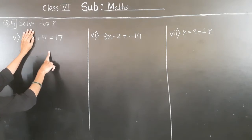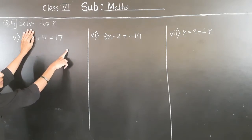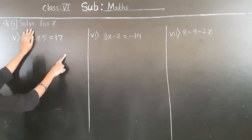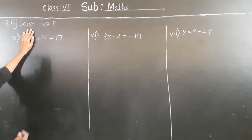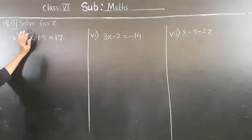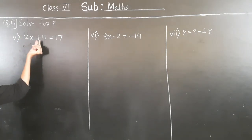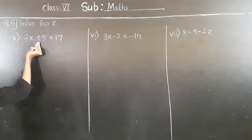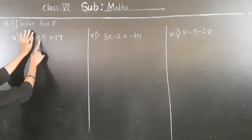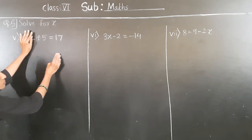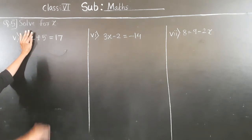So let's transfer 5 to the right hand side. 5 is here plus — if we transfer to the right hand side, then it will become minus. Between 2x and 5, the operation given is plus, so if we transfer 5 to the right hand side it becomes minus 5.